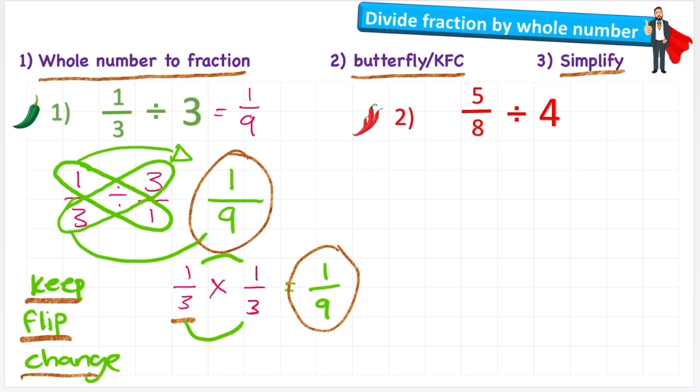Let's look at a slightly harder one. Let's look at five eighths divided by four. And for this, I'm only going to use butterfly. So here we go. Five eighths divided by four. First of all, turn it into a fraction. Put it over one. Then I'm going to use butterfly.